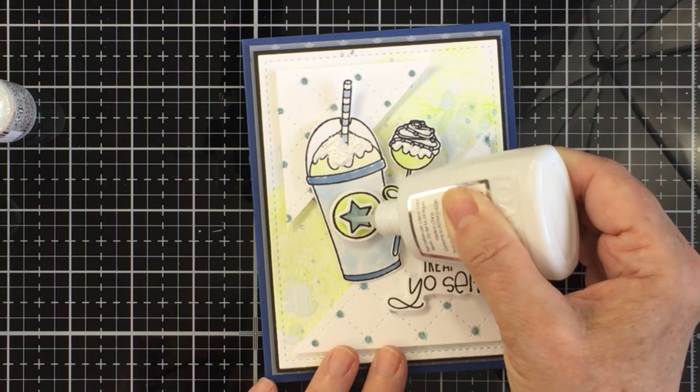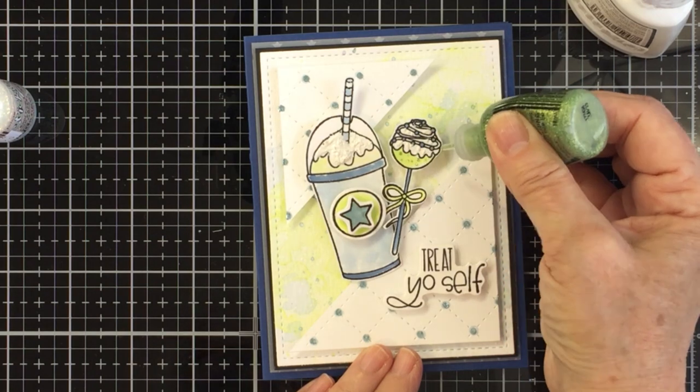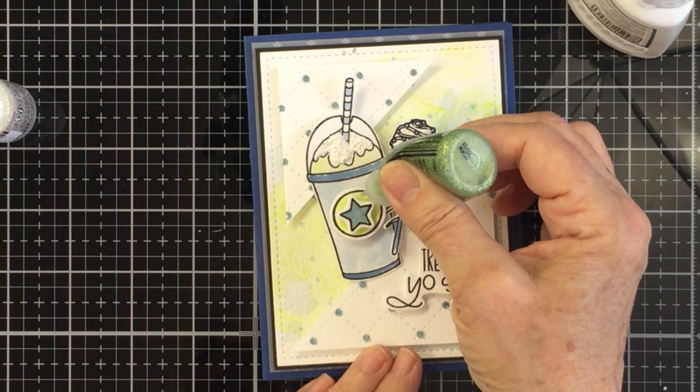Now I'm going to finish off the star with a little bit of nouveau glaze, and I'm going to add a little bit more sparkle and shine to my card with some stickles in seafoam and diamond, and that's going to finish off my card.